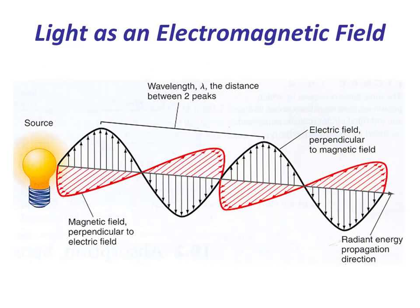As you should all remember from first year, light is an oscillating electromagnetic field that consists of an oscillating electric field, drawn here in black, and an oscillating magnetic field, drawn here in red. These two fields are oriented perpendicular to one another and perpendicular to the direction of radiant energy propagation, which is shown by the grey arrow. Both fields also have the same wavelength, which corresponds to the distance between two peaks, as illustrated.